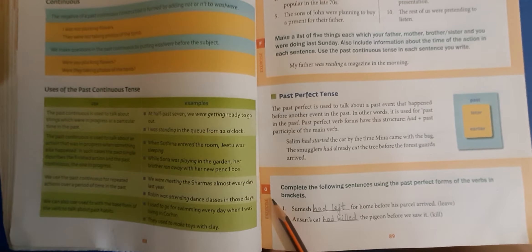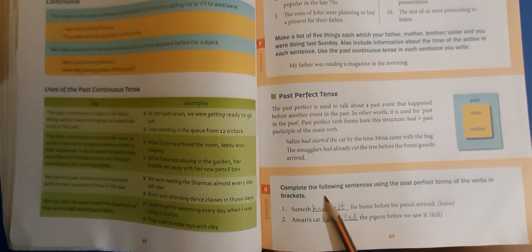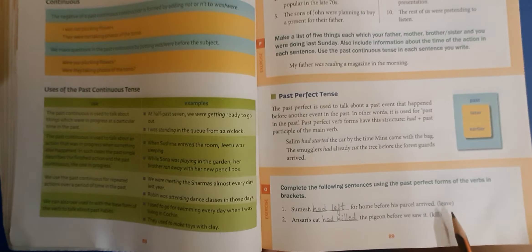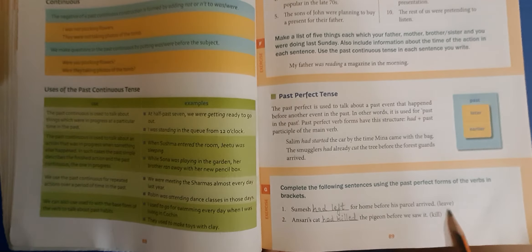Exercise G: Complete the following sentences using the past perfect forms of the verbs in brackets. The main verb is given in brackets — you have to write had plus past participle of the main verb.